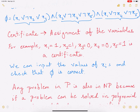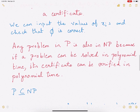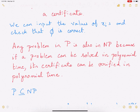So what have we talked about so far? P is all problems that can be solved in polynomial time, and NP is those problems whose certificate can be verified in polynomial time. This begs the question: what is the relationship between P and NP? Any problem in P is also in NP, because if a problem can be solved in polynomial time, its certificate can easily be verified in polynomial time. If somebody gives you the problem, you can find a solution in polynomial time — therefore if somebody gives you the solution, you can definitely check it in polynomial time. So P is definitely a subset of NP.